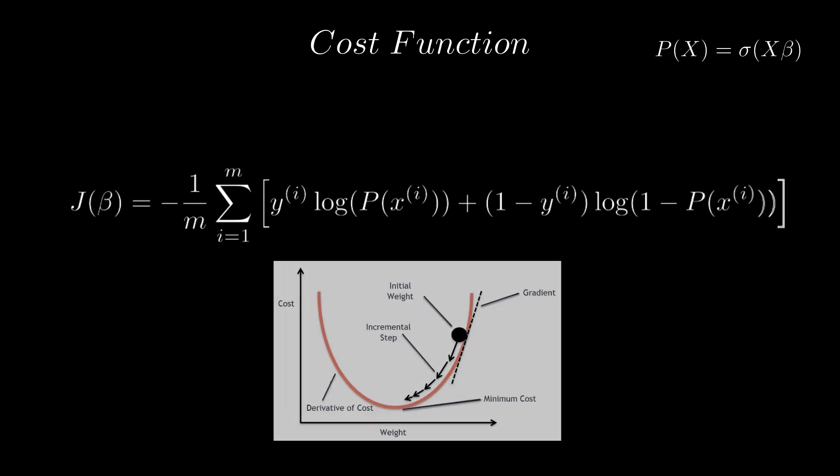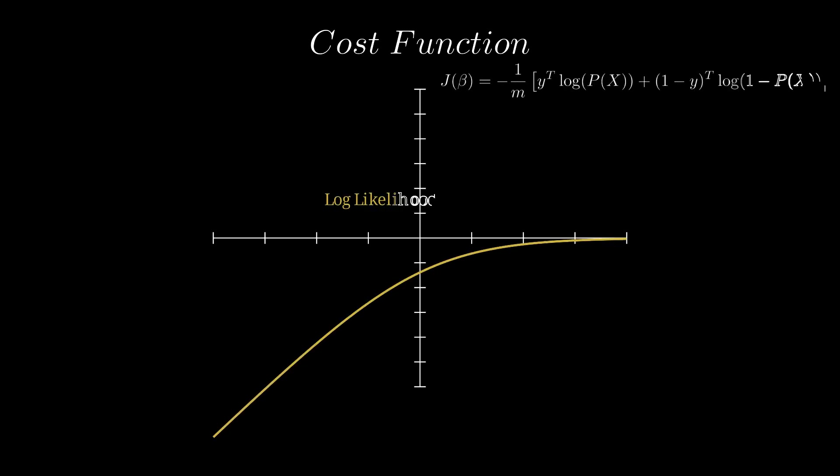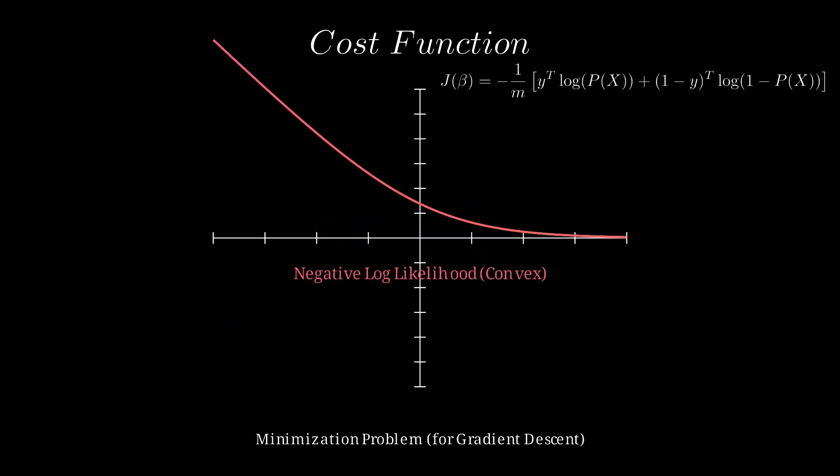So we use gradient descent to estimate the coefficients. By taking the log of this likelihood function for simplicity, and in nature you can notice this function maximizes. So taking the negative of it makes it minimize, which fits the gradient descent.